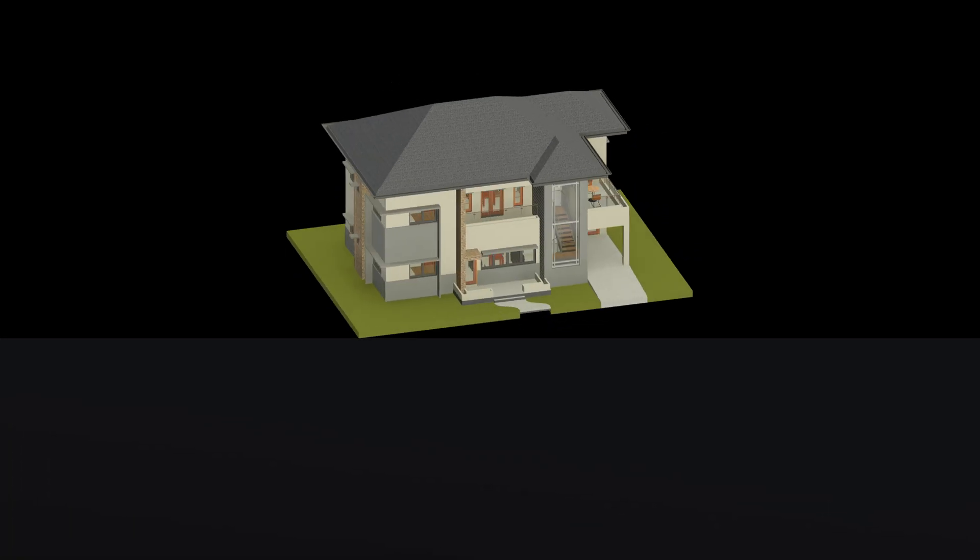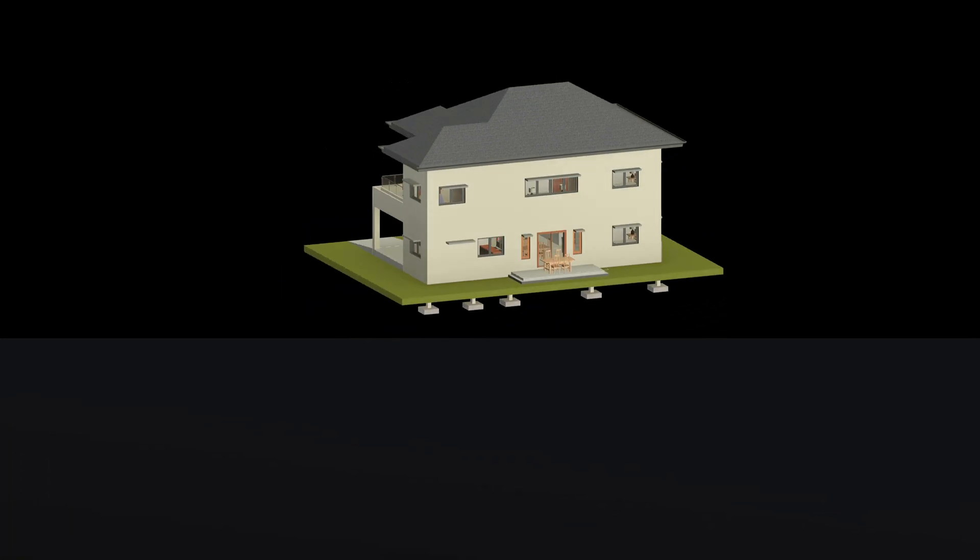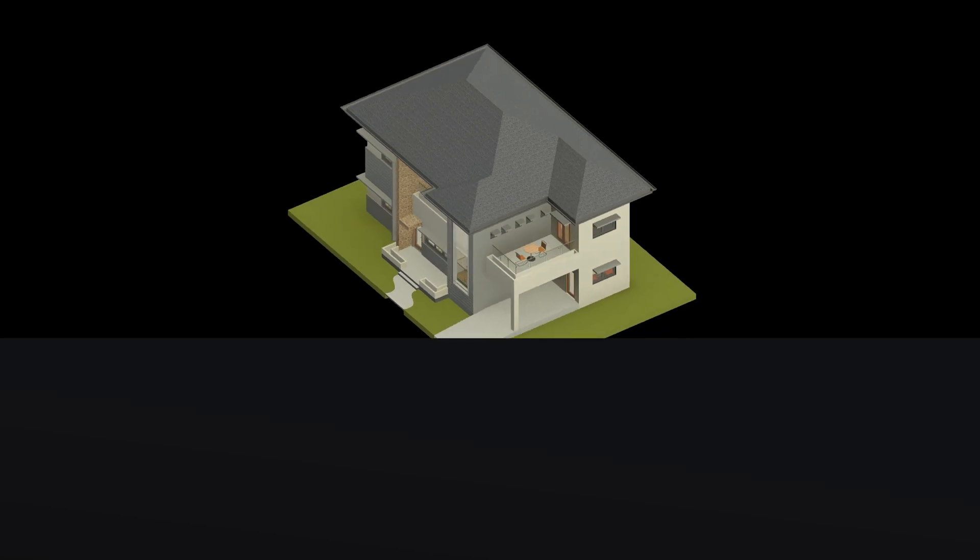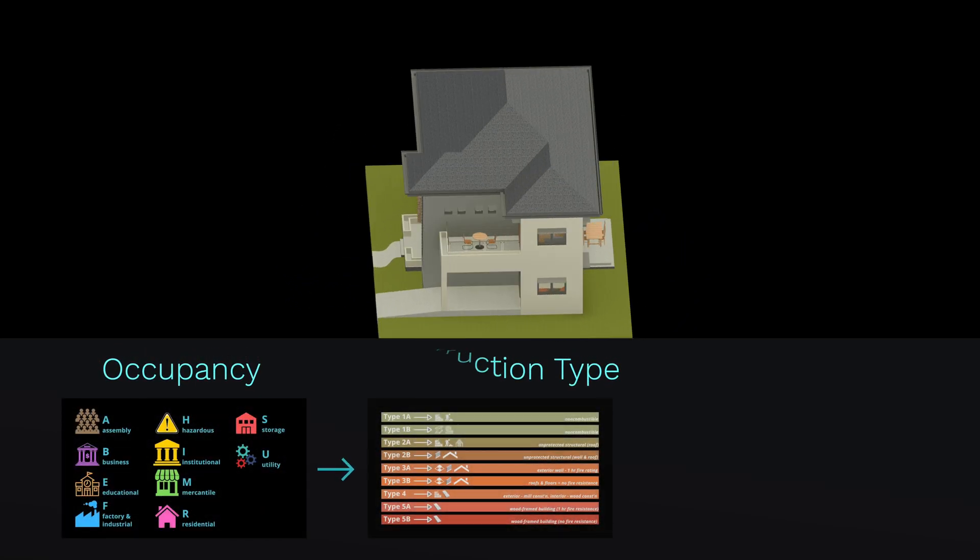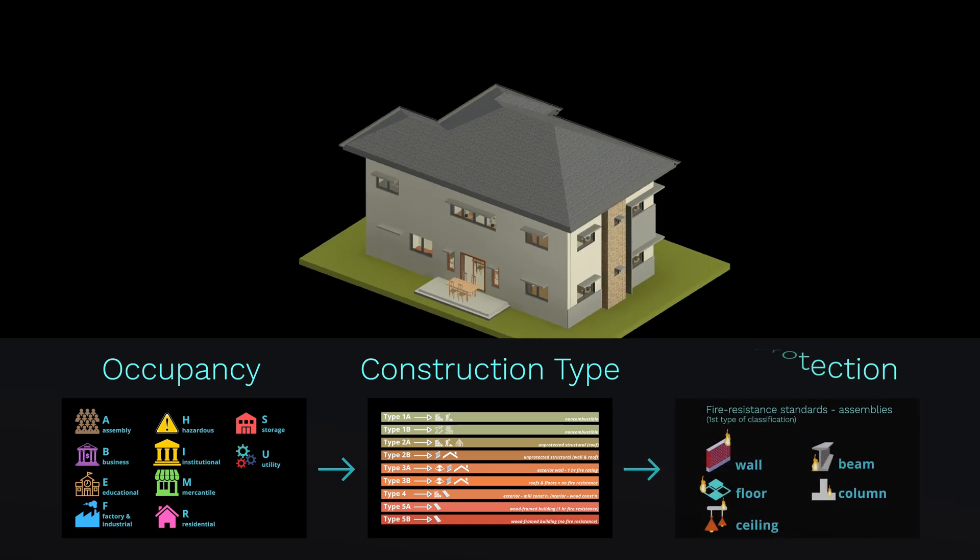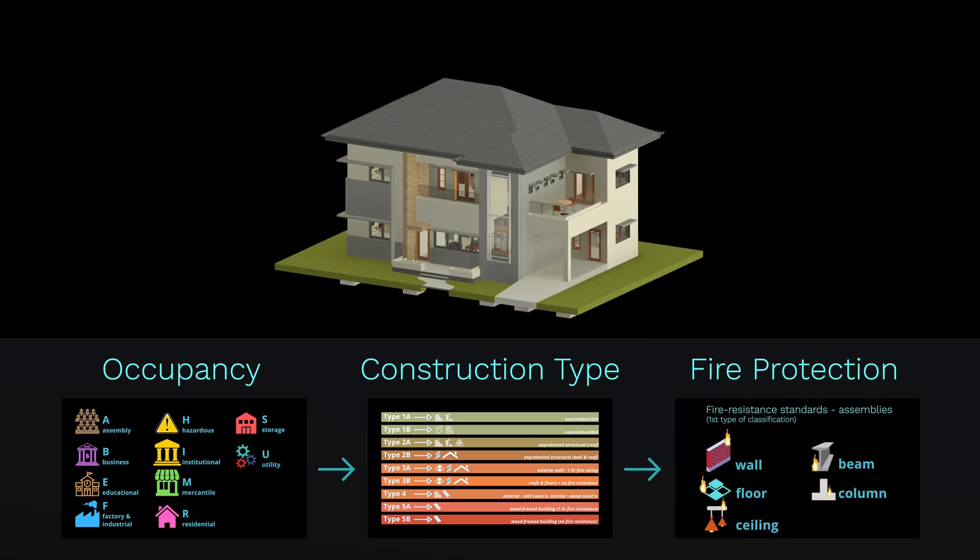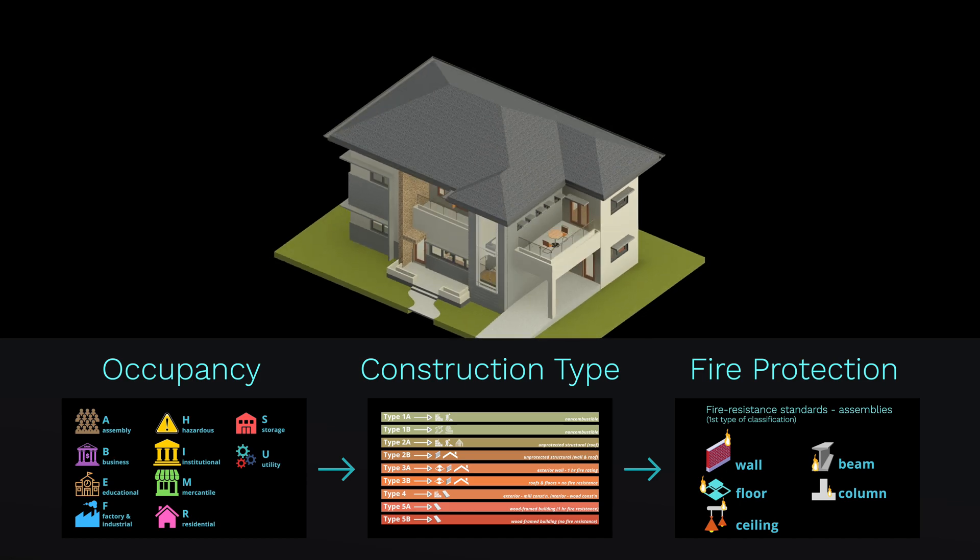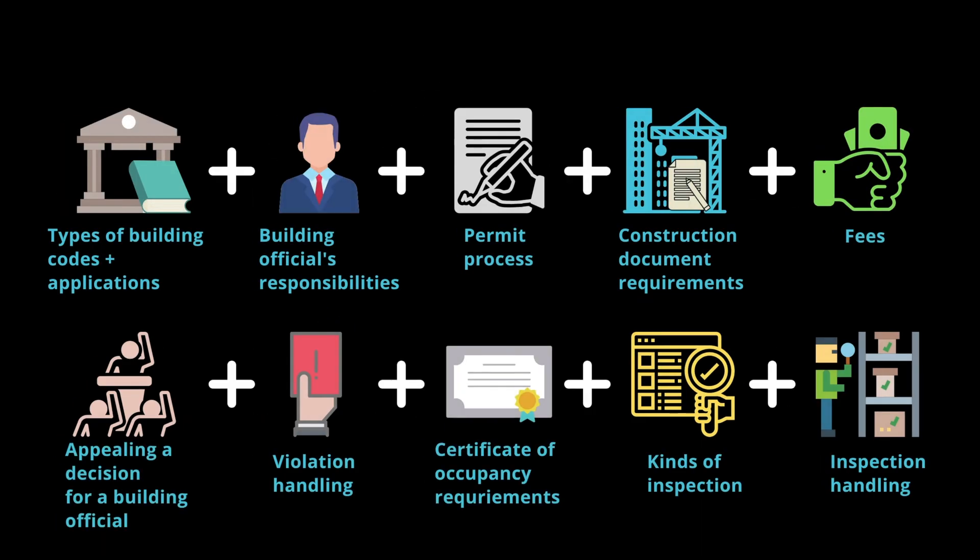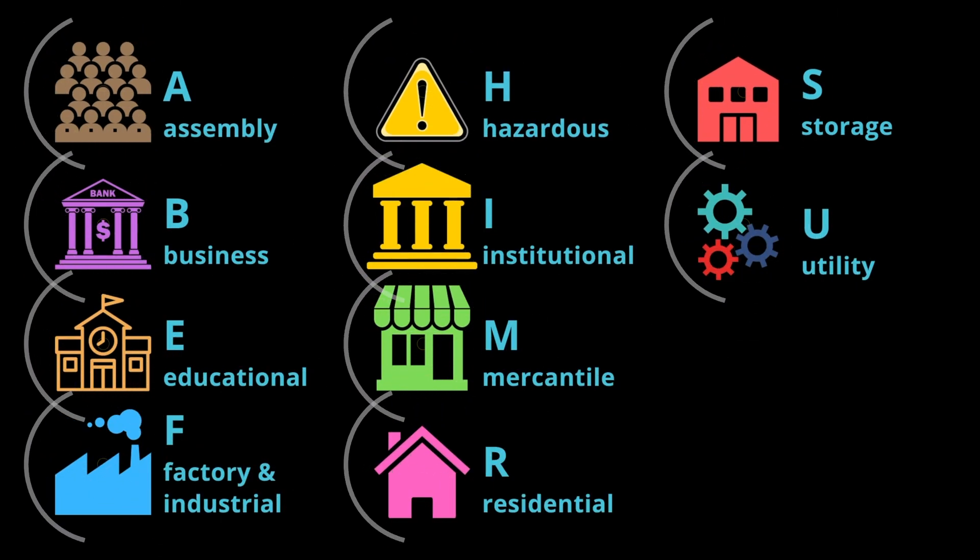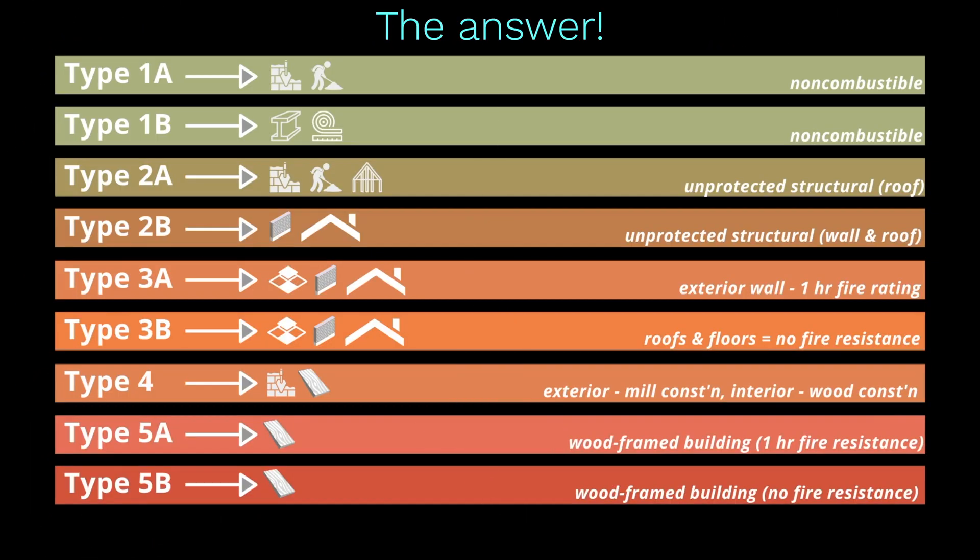Hey, what's up everyone! Before you start the prototype of your building, you first need to identify its occupancy, construction type, and fire and smoke protection requirements. This video will present these ideas through easy-to-understand colorful animations and drawings. By the end of this video, you'll master the essential design principles that architects always use in their designs.